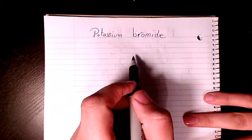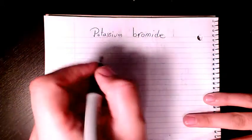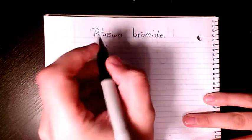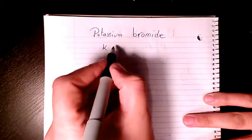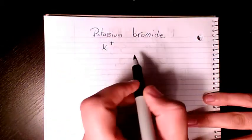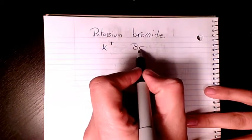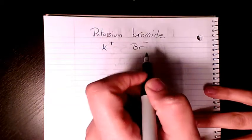how to calculate the molar mass of this compound. Potassium is K and it belongs to group one, that's why it's going to be K+. And bromide is coming from bromine, which belongs to the halogen group.